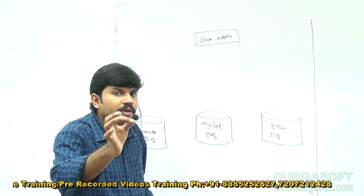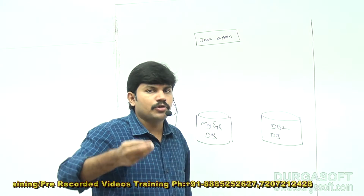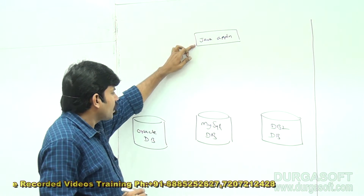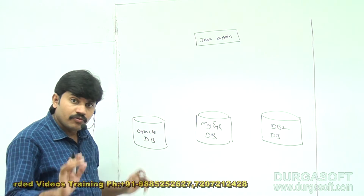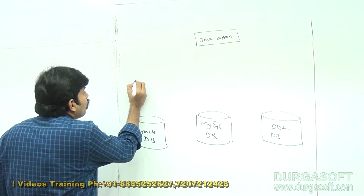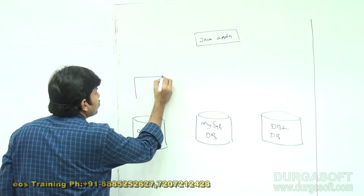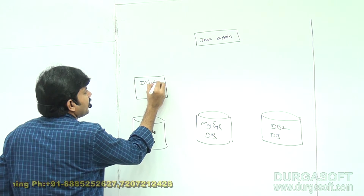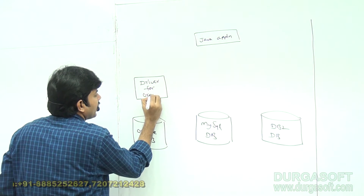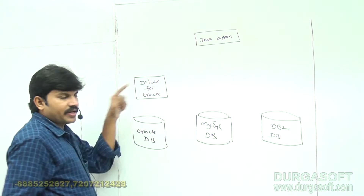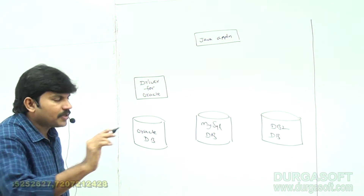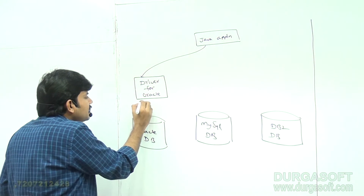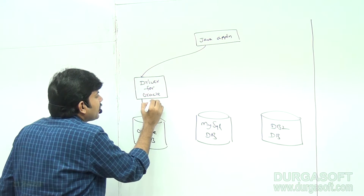How many Java applications are there? Only one application. But how many databases are there? Three databases. Is it required to write a separate Java application for every database? No. A single Java application can communicate with Oracle, MySQL, and DB2 databases. But how this communication is going to happen — we need to understand a small but important point.